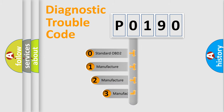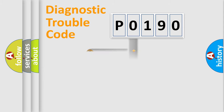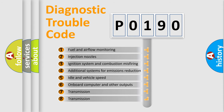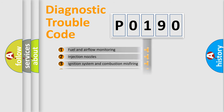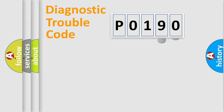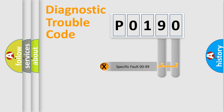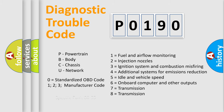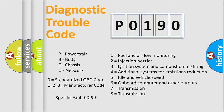If the second character is expressed as zero, it is a standardized error. In the case of numbers 1, 2, or 3, it is a more manufacturer-specific expression of the error. The third character specifies a subset of errors. This division is valid only for the standardized DTC code, where only the last two characters define the specific fault of the group.